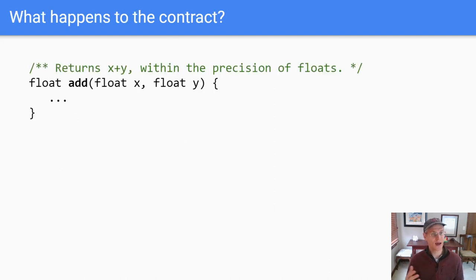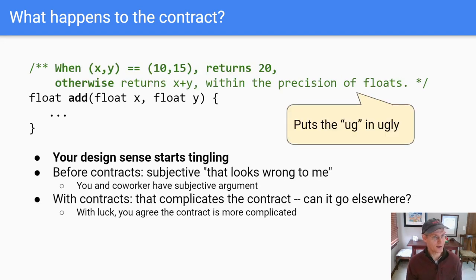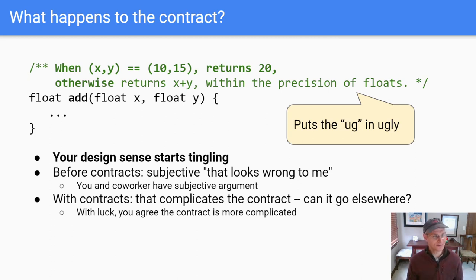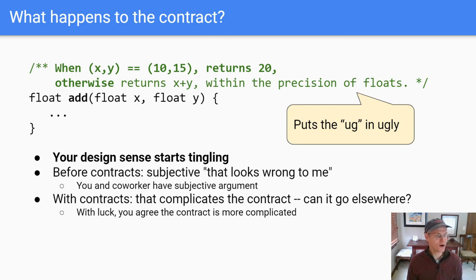Here's what would happen if we had contracts — if we were thinking about this starting with contracts. Here's a plausible contract for the add routine: it returns X plus Y within some degree of precision. If we took your colleague's suggestion, you might have something like this: when X plus Y is adding 10 and 15, it returned 20, which clearly is a crazy thing to do, but it's in the contract now. Otherwise, it returns X plus Y. As soon as we write that contract down, your design sense starts tingling. You can point to that contract and say, that contract looks wrong to me, and you and your coworker can have a discussion about it.